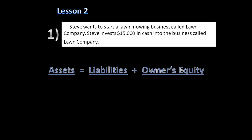Here's our accounting equation: assets equal liabilities plus owner's equity. The company increased cash by $15,000 because Steve invested $15,000 in cash. Cash is an asset, so it goes under assets, and it is increased by $15,000.